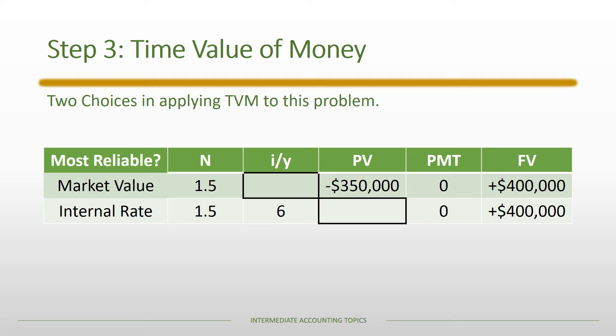There are two choices for applying TVM. If we believe the market value is more reliable, the present value is $350,000 and we solve for the yield. In both cases the future value is $400,000 — the amount paid in a year and a half — with N = 1.5 years. If we believe the internal borrowing rate is more reliable, we're given the yield and solve for the present value. These two approaches give different numbers, so part of the process is determining which is more reliable.